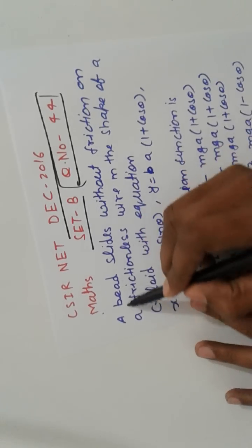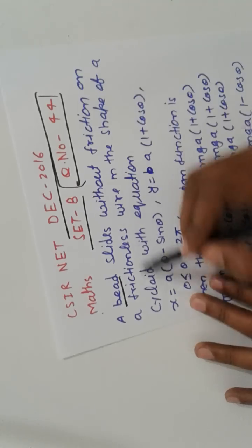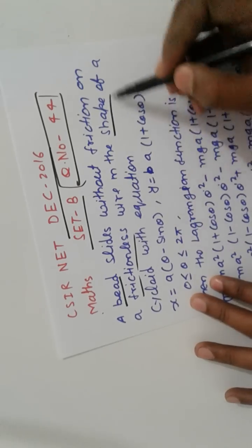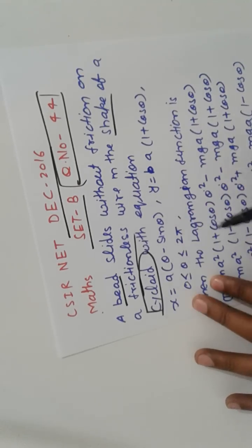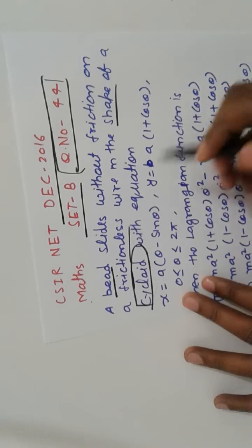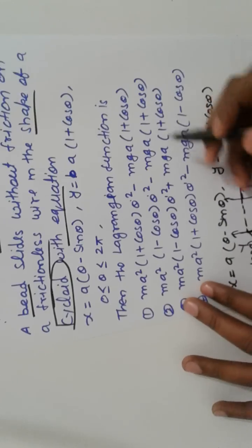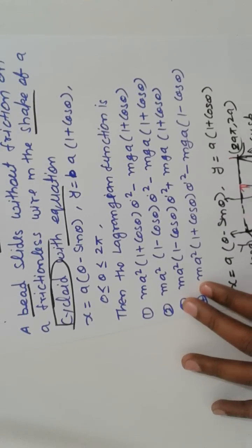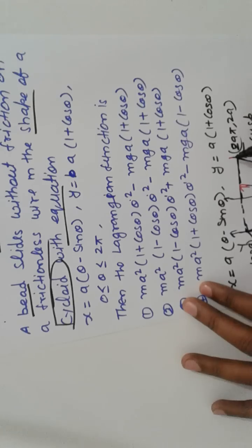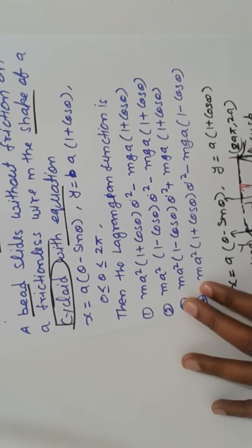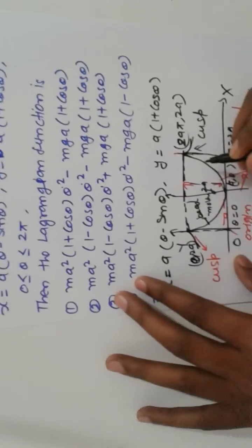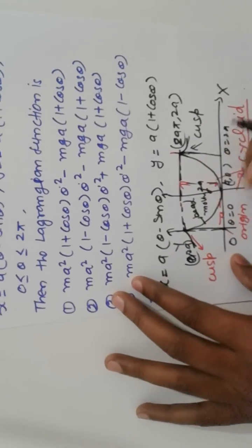Here is a bead sliding without friction, frictionless on a cycloid. It is important - this shape of cycloid with this given length. So that is the figure of cycloid here without friction. The bead is moving.